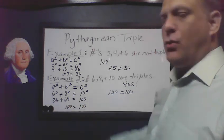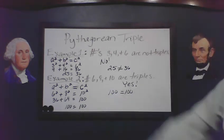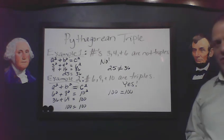36 plus 64 is 100, and 100 equals 100. So yes, this is going to be a Pythagorean triple.